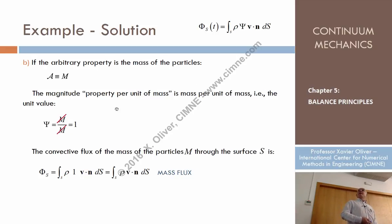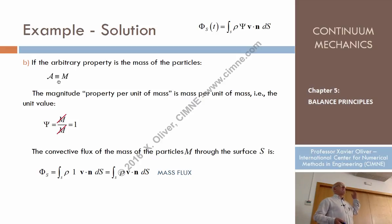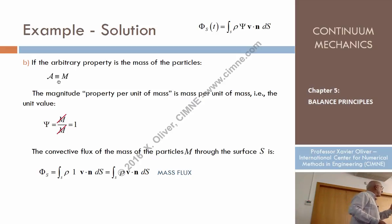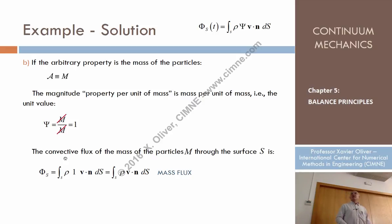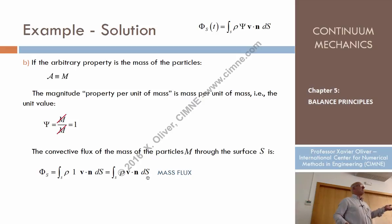What if the property is mass? How do we compute the mass flux — the amount of mass that crosses a surface per unit of time? We need to define the specific content of mass per unit of mass. The mass per unit of mass is simply one. So the flux of mass would be the integral of rho times one times B·n differential of S, which gives rho B·n differential of S.